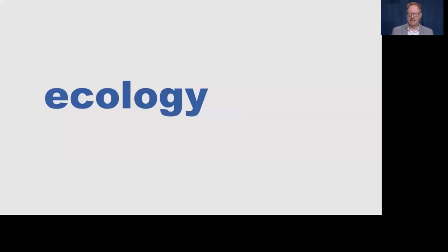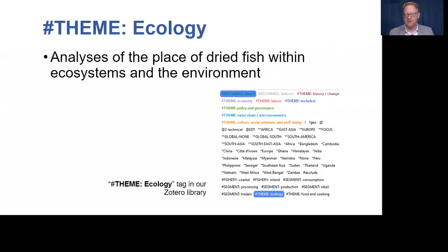Starting with our first theme: ecology. There is a substantial literature on fisheries ecology, but very few studies we found have directly addressed the relationship of dried and fermented fish processing to ecological factors. We used the ecology tag in our Zotero database to identify analyses of the place of dried fish within ecosystems and the environment, and we identified four main sub-themes within this somewhat limited literature.